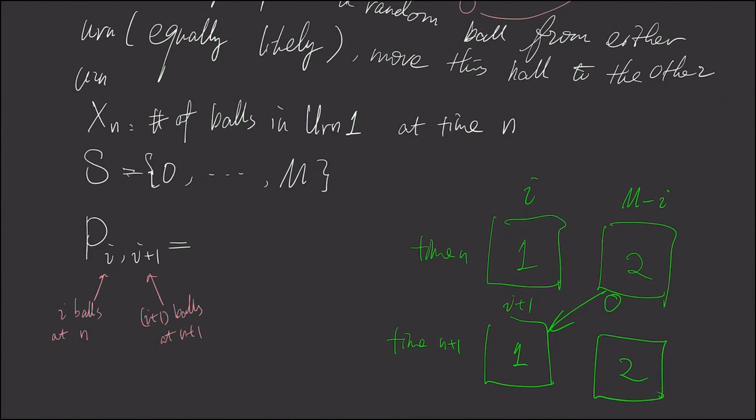So we picked a ball from urn number two, and we moved it to urn number one. And that means we must have chosen a ball from urn number two. And urn number two has m minus i balls. There are totally m balls. So the probability is m minus i divided by m.